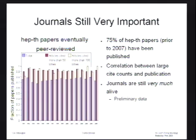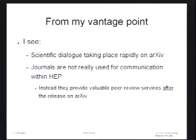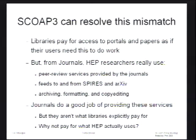So what SCOAP3 is trying to do is resolve that conflict, that mismatch. Libraries right now pay for access to portals and papers as if their users are going to need these things — they really don't. Instead, what they need is peer review services, and journals provide these services. So what SCOAP3 is doing is saying: let's pay for what HEP actually uses.